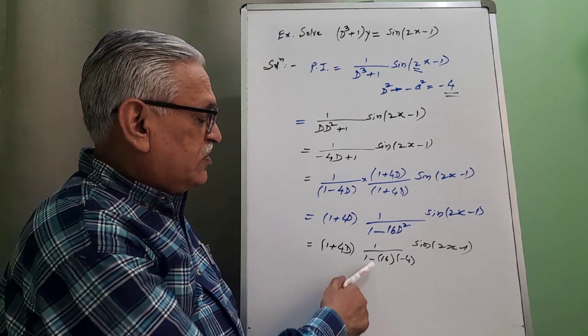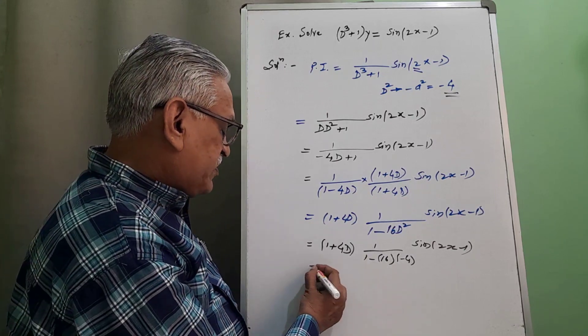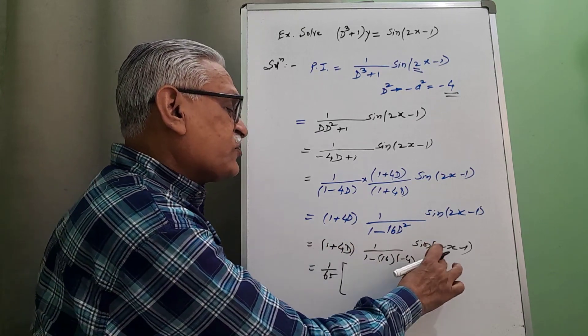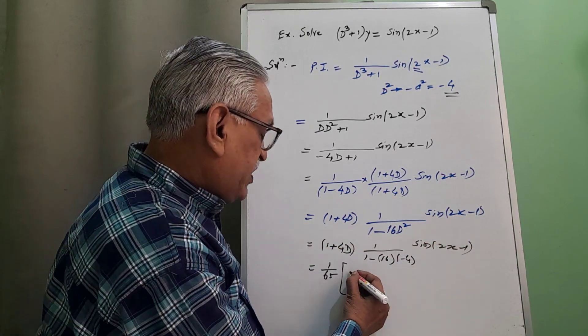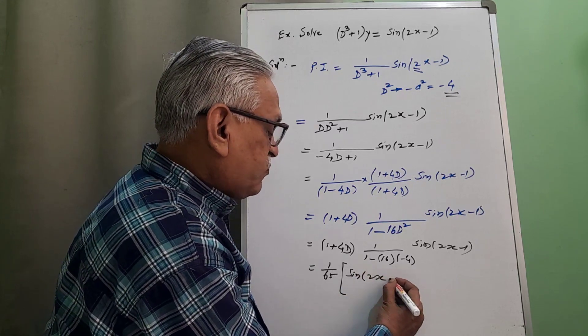64 is the, 64 minus minus plus, 64 plus 1 we get 1 by 65. 1 into sin of 2x minus 1, we get that term as sin of 2x minus 1.